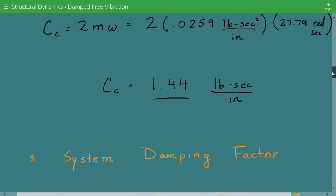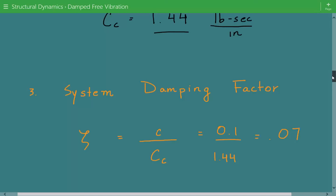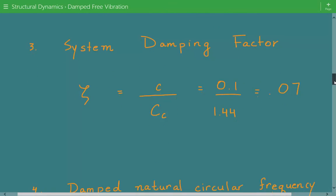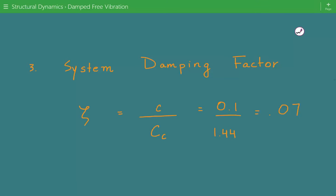After this, we calculate the system damping factor zeta. Zeta equals the damping coefficient divided by the critical damping constant. The damping coefficient is 0.1 and the critical damping constant is 1.44, so zeta equals 0.07. This tells us whether the system is underdamped, critically damped, or overdamped. Since zeta is less than 1, our system is underdamped.